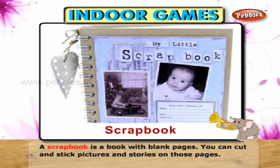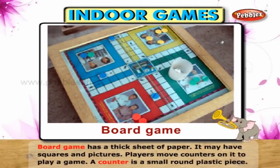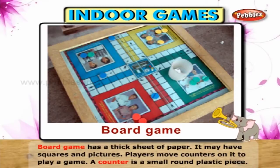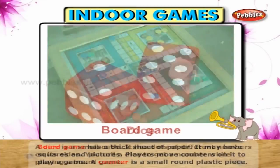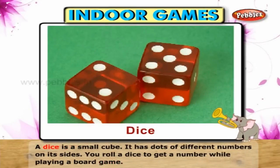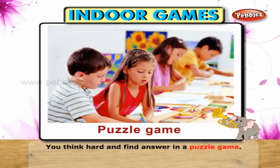A scrapbook is a book with blank pages — you can cut and stick pictures and stories on those pages. A board game has a thick sheet of paper; it may have squares and pictures, and players move counters on it to play a game. A counter is a small round plastic piece. A dice is a small cube with different numbers on its sides — you roll a dice to get a number. While playing a board game, you think hard and find answers in a puzzle game.